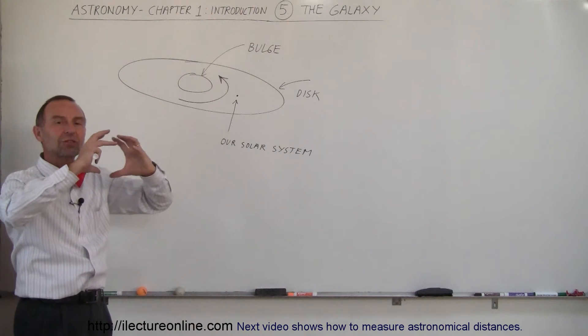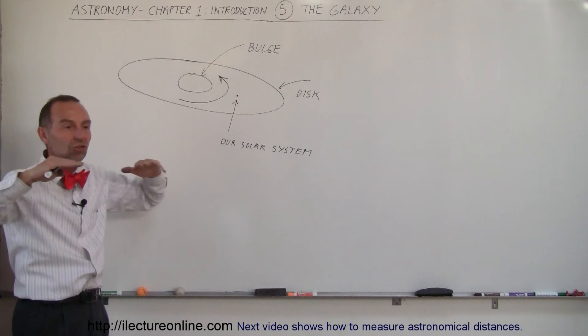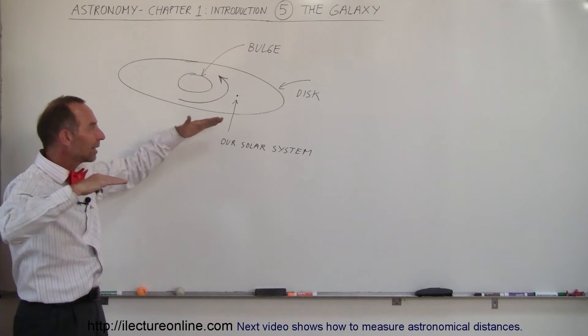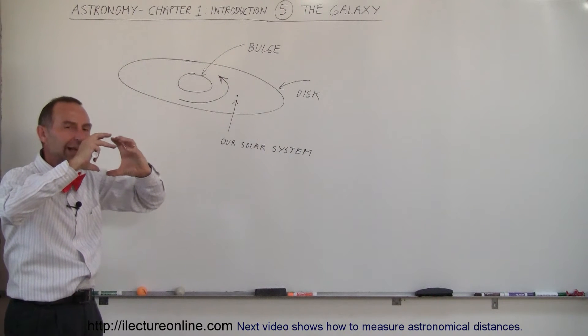So the bulge tends to be somewhat spherical in shape, and the disk tends to be kind of flat and pancake-like in shape. So most galaxies like the spiral galaxy right here tends to be relatively flat except for the middle that has kind of a bulge.